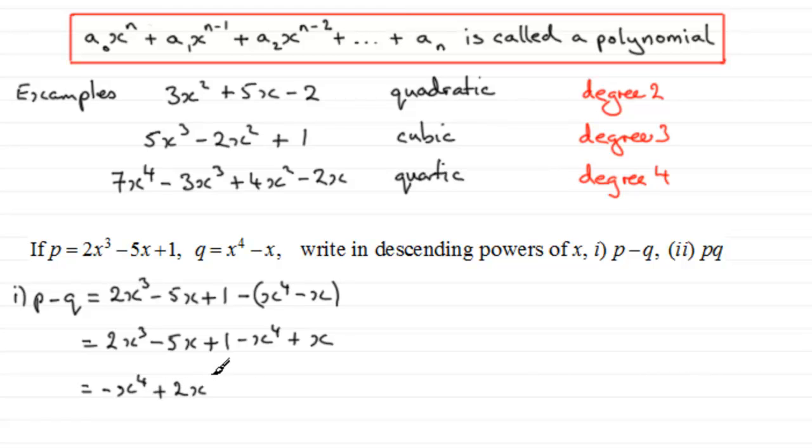We have no x squared term, but we have an x term here, minus 5x, and we can group it with the plus x. So it's going to be minus 5x plus x, which is minus 4x. And then we've got the constant, so plus 1. So there we have our polynomial. It's of degree 4, called a quartic, and it's written in descending powers. So that was that one.